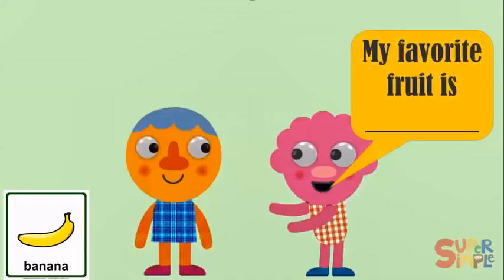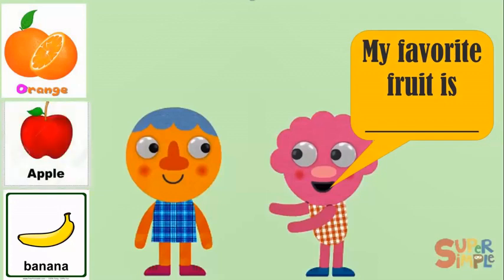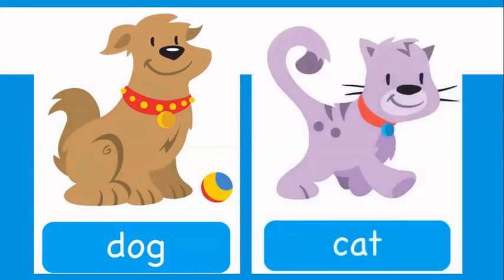Now we practice the following question: My favorite fruit. Ya el año pasado vimos acerca de las frutas — hasta incluso una la tenemos allí que es de banana. Vamos a practicar cuáles otros más vimos: orange, apple. Entonces, con esas tres frutas que vimos el año pasado, ustedes van a completar esta pregunta: My favorite fruit is. Orange, apple, or banana. We practice some animals: the dog and cat.